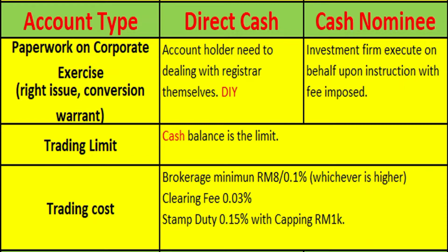For the cash nominee account, investors need to notify the investment officer to process these for them. They need to deposit a fee into the investment account for conversions or subscriptions, and the investment officer will process the corporate actions on behalf of the investors.